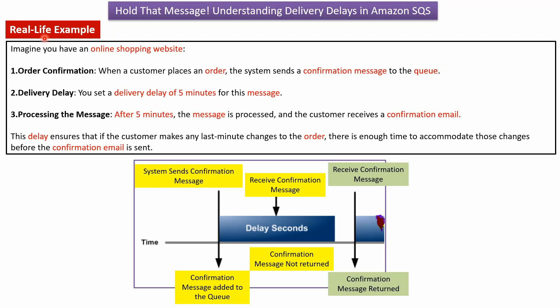Now we will see a real-life example. Imagine you have an online shopping website. When a customer places an order, the system sends a confirmation message to the queue, and you set a delivery delay of 5 minutes for this confirmation message. After 5 minutes, the message is processed and the customer receives a confirmation email. The delivery delay ensures that if the customer makes any last-minute changes to the order, there is enough time to accommodate those changes before the confirmation email is sent.